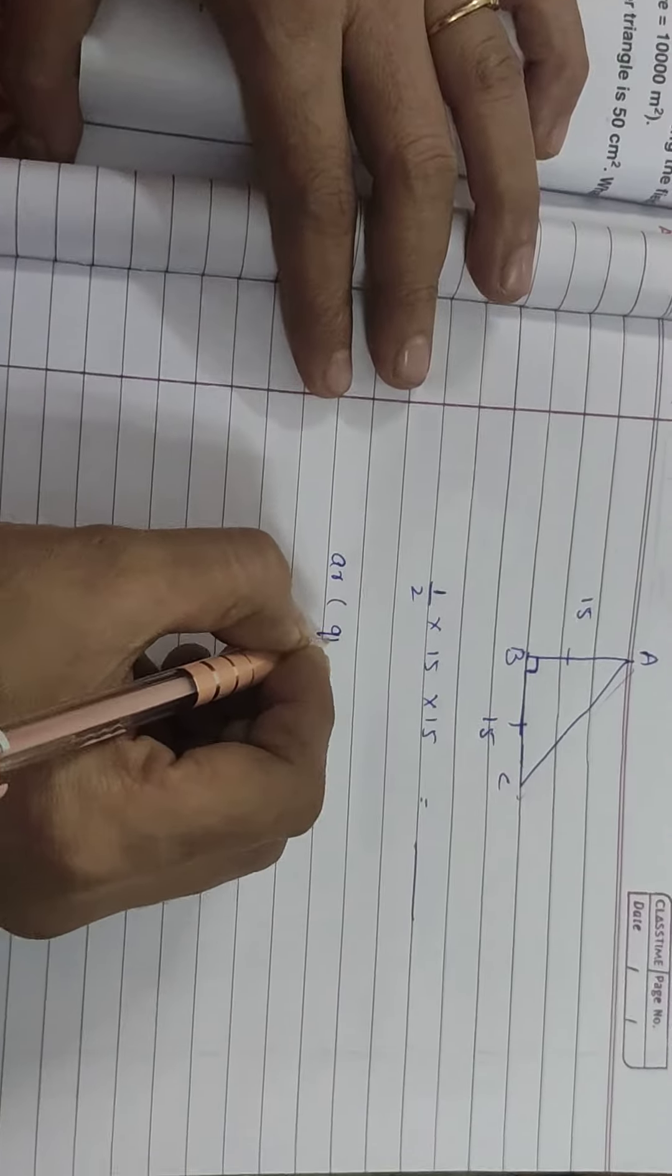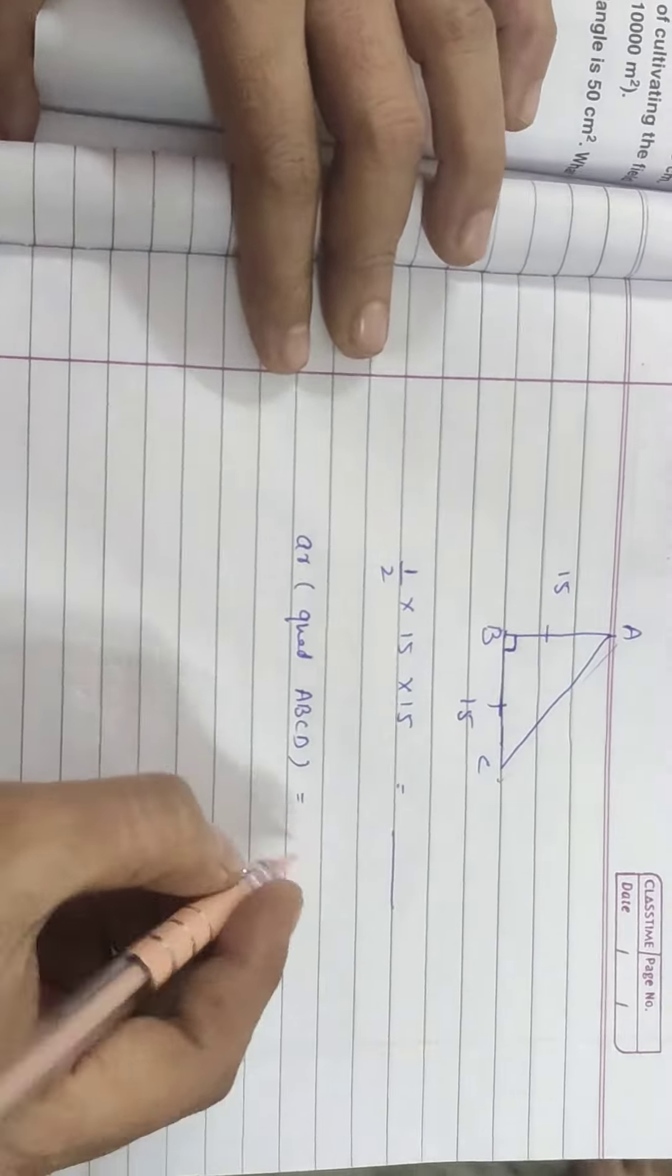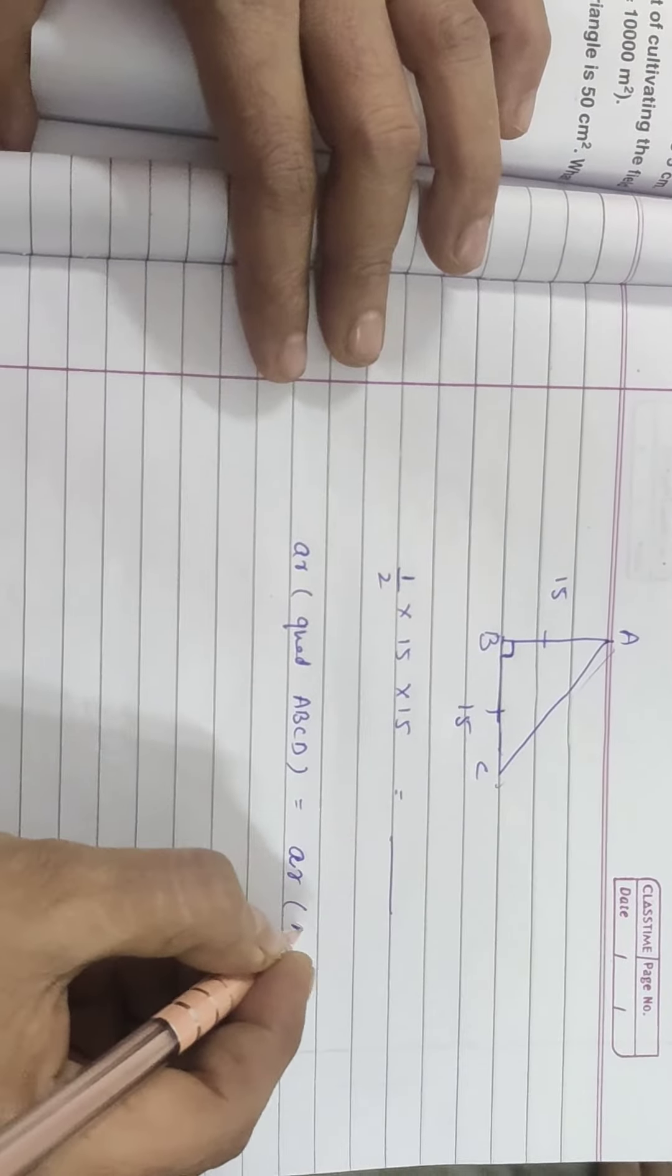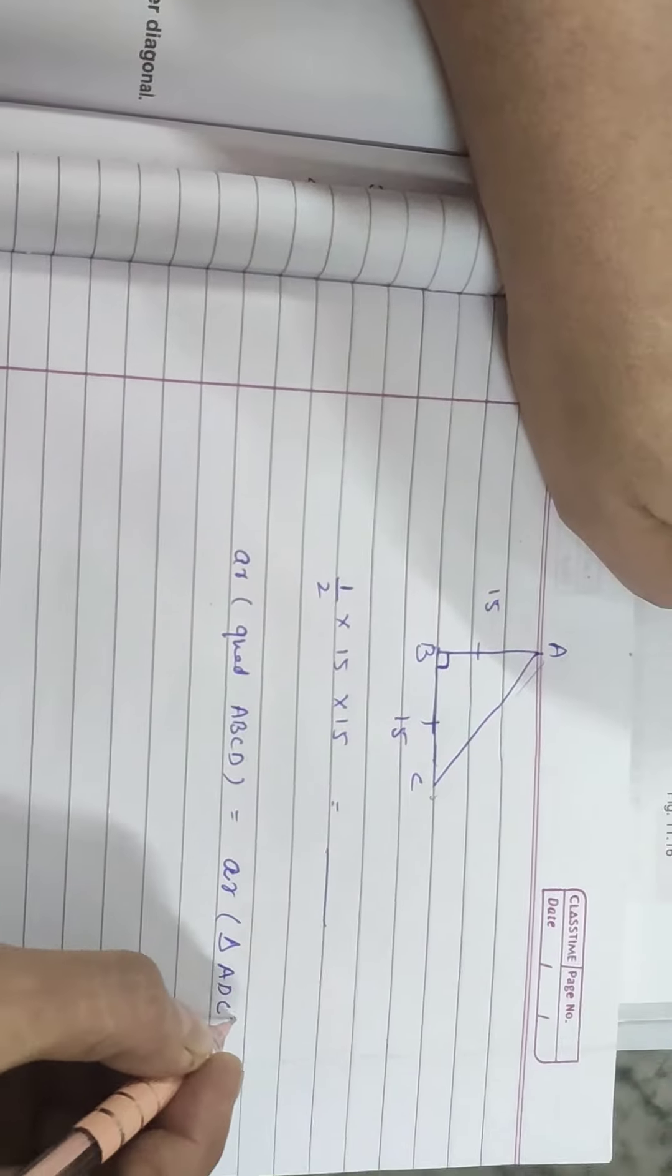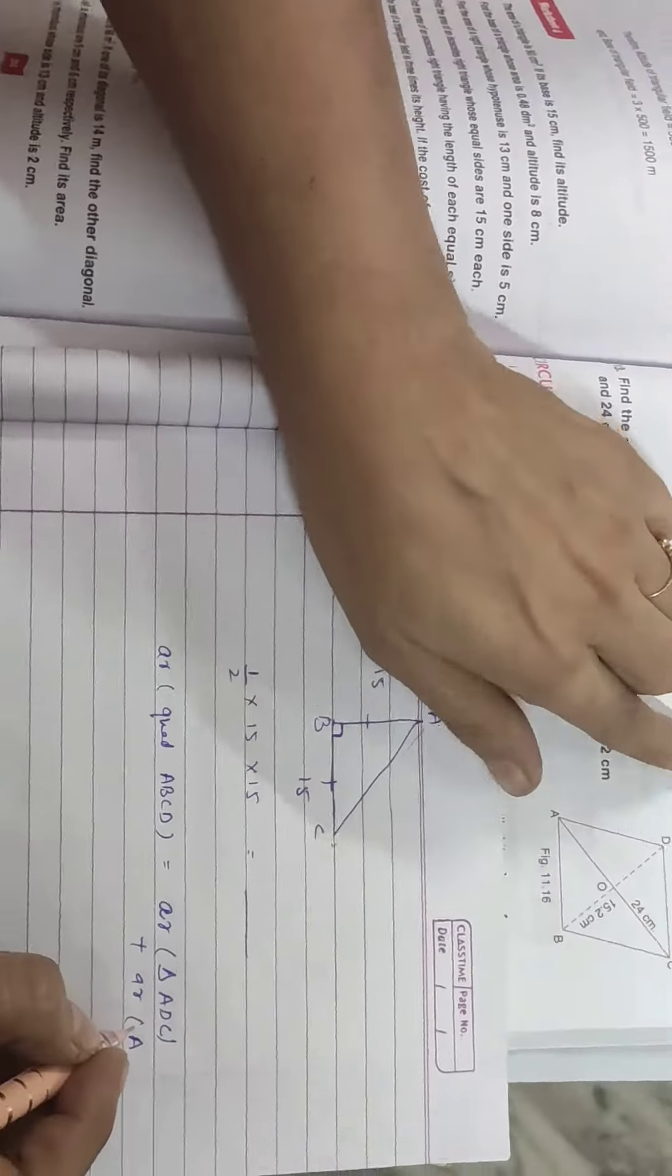Area of quadrilateral ABCD is equal to area triangle ADC plus area triangle ABC.